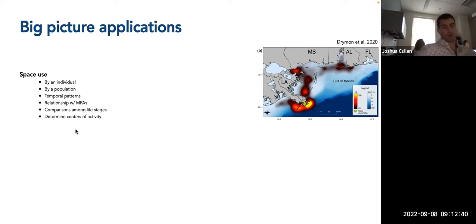So the first major topic here that I'm going to discuss is space use. This could be investigated by individual or an entire population of a species. You could be interested in things such as temporal patterns, so diel patterns over the course of a day, seasonal patterns, all kinds of things. Relationships with marine protected areas, if it's a marine organism. So how much of a protected area is a given individual using? And does that differ across individuals of a population or only during a breeding season versus the rest of the year? You could also make comparisons among life stages, so juveniles versus adults or other intermediate life stages, and also potentially determining centers of activity. So what areas are these individuals primarily using? And maybe you would later tie that to different environmental variables of some sort.